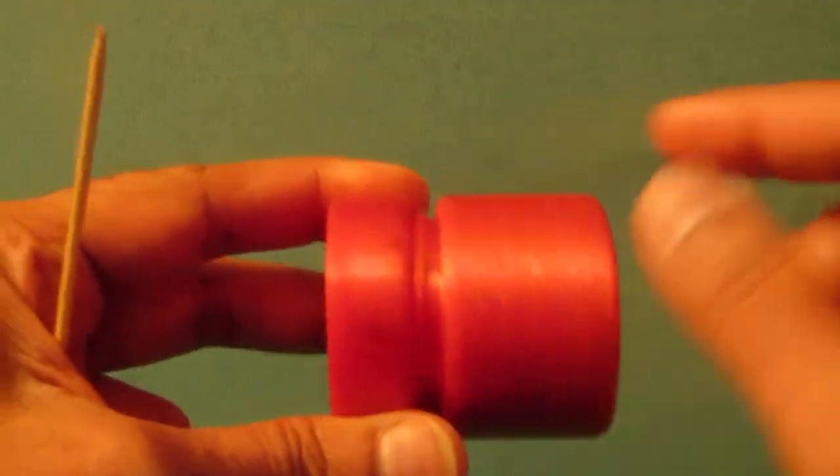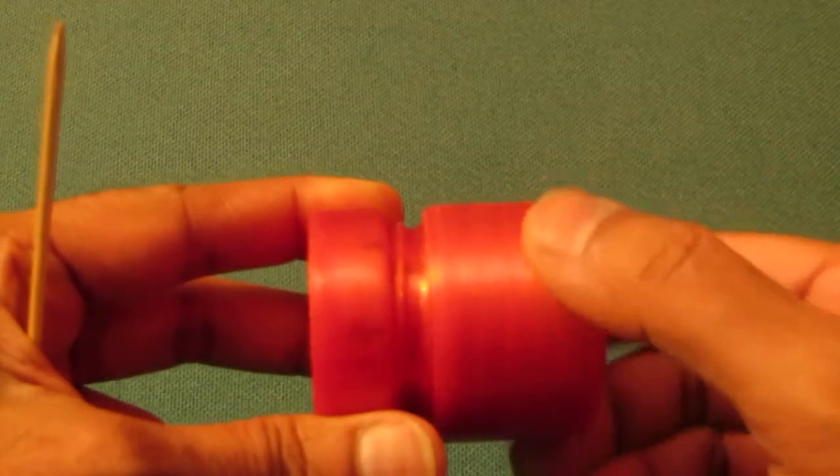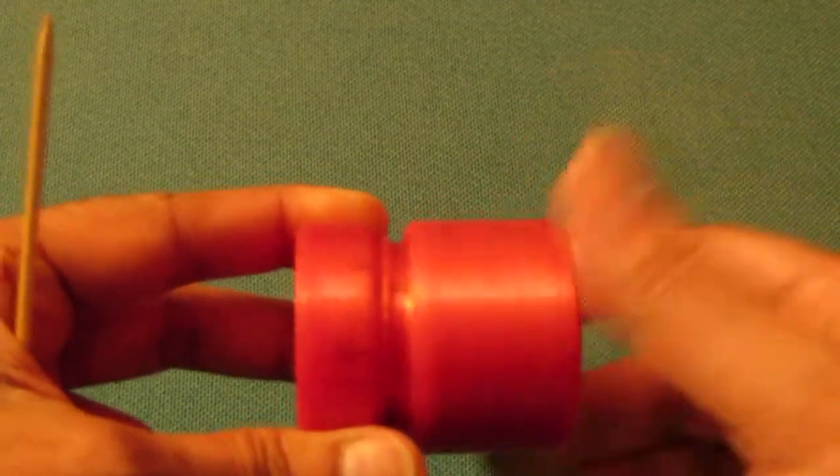Hi guys, this is a left-handed screw. If I turn it in the clockwise direction, it would come loose and if I turn it counterclockwise, it'll tighten up.